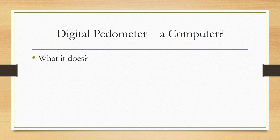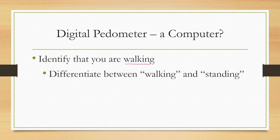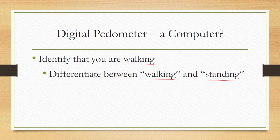Let us come back to the digital pedometer - whether it is a computer or not. What does a pedometer do? The main objective of a pedometer is to identify that the wearer is walking or not. Nowadays pedometers also have many other features, but let us focus only on the key function of a digital pedometer which is trying to determine the walking speed and the walking distance. So, essentially it tries to identify whether you are walking or not, and in order to do that it must differentiate between walking and standing.